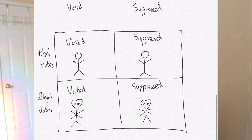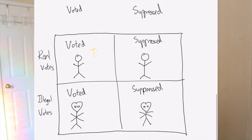Now we can actually see where data science is applied. We have a confusion matrix covering every scenario of how votes can be cast, suppressed, and fraudulent in the election. We can apply the definitions of sensitivity and specificity to our confusion matrix — we have true positives, true negatives, false positives, and false negatives.